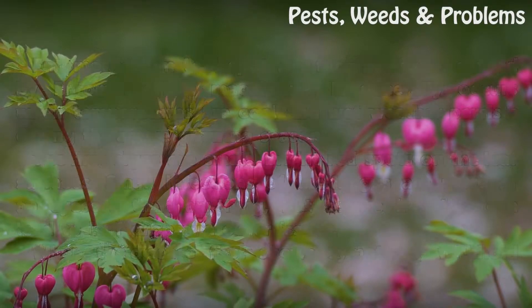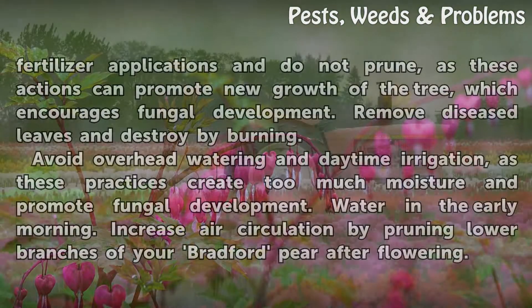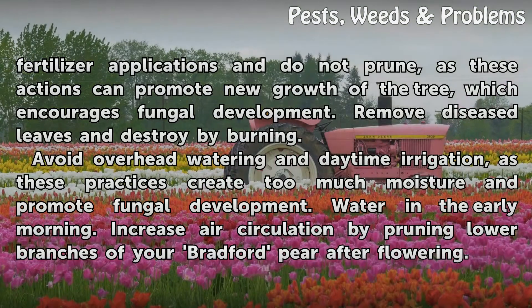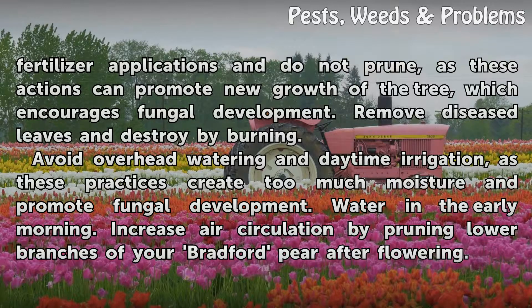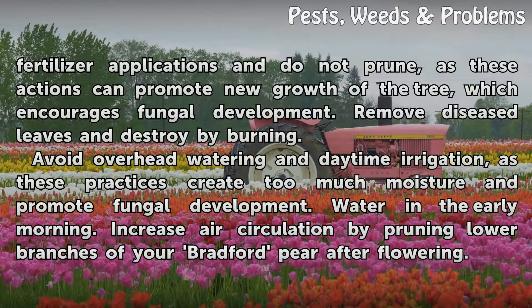When the disease first shows symptoms, withhold fertilizer applications and do not prune, as these actions can promote new growth of the tree, which encourages fungal development. Remove diseased leaves and destroy by burning. Avoid overhead watering and daytime irrigation, as these practices create too much moisture and promote fungal development. Water in the early morning. Increase air circulation by pruning lower branches of your Bradford pear after flowering.